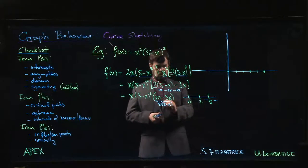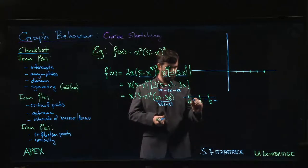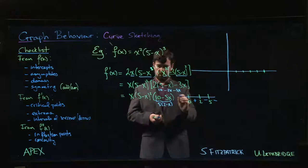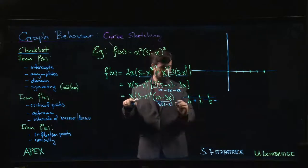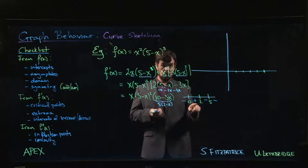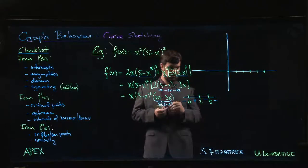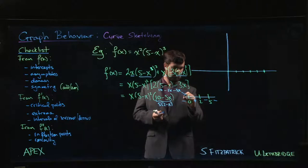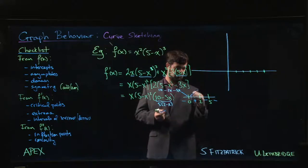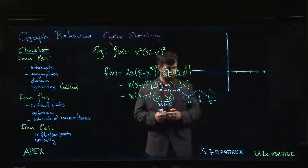Because of the even power, f' stays negative on both sides of x=5. Crossing x=2, the factor (2-x) becomes positive, so f' becomes positive. Crossing x=0, x becomes negative, so f' becomes negative again. The function is increasing only on the interval from 0 to 2, and decreasing everywhere else.